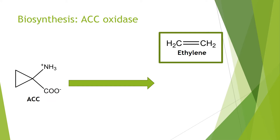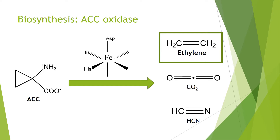The key product of our last reaction was ACC, and ACC can be converted to ethylene using ACC oxidase. ACC oxidase uses a non-heme iron as a redox center, and the reaction involves molecular oxygen and also the oxidation of ascorbate, or vitamin C. It doesn't just create ethylene though — it also creates CO2 and hydrogen cyanide. The cyanide is actually removed by cyanoalanine synthase, and this prevents the toxic buildup of cyanide when you have high rates of ethylene production.